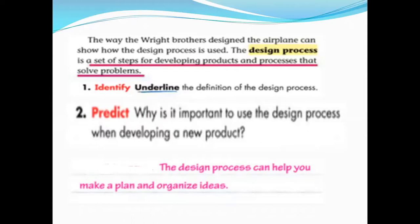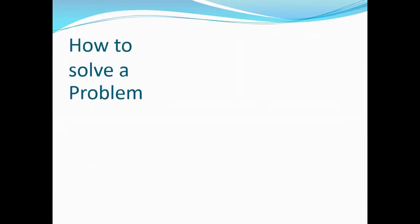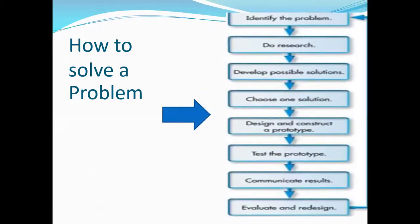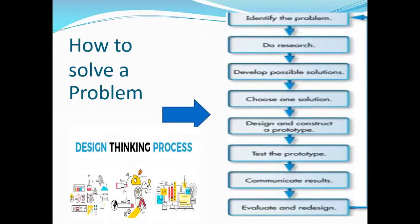Again, the meaning of the design process is a set of steps for developing products and processes that solve problems. How to solve problems or design a process. What are the steps? First, identify the problem. Do research. Develop possible solutions. Choose one solution. Design and construct a prototype. Test the prototype. Communicate your results. Evaluate and you can redesign again.